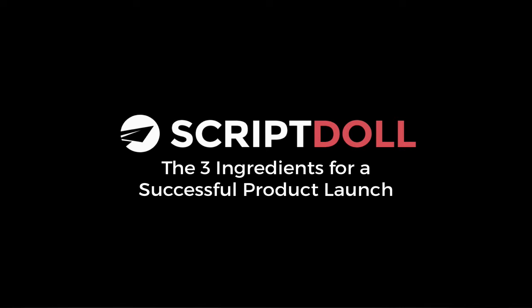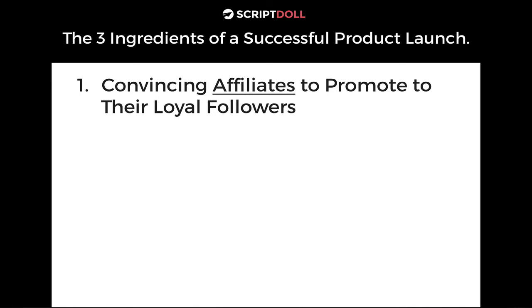Let's get going with the three ingredients for a successful product launch. There are a few things you need to focus on, and if you focus on these things, you'll know exactly what you need to build. The first is you have to convince affiliates to promote to their loyal followers. A big part of a really good product launch is getting other people to promote — and that is a sales process in itself. A lot of people ignore this: not only do you have to convince buyers that your product is a good fit for them, but you also have to convince affiliates that this thing you've got for sale is something they should promote to their followers.